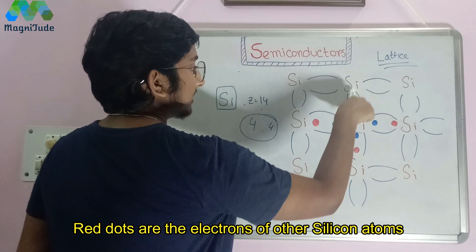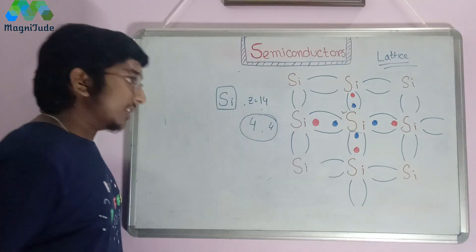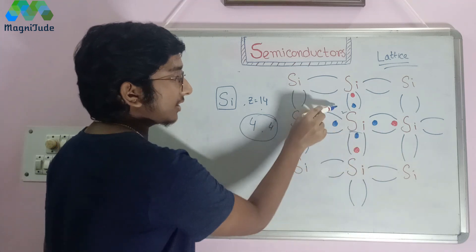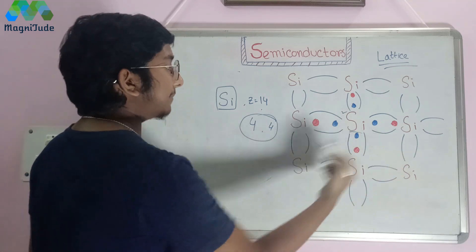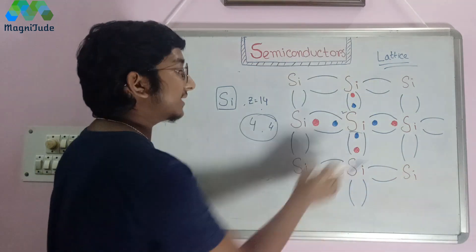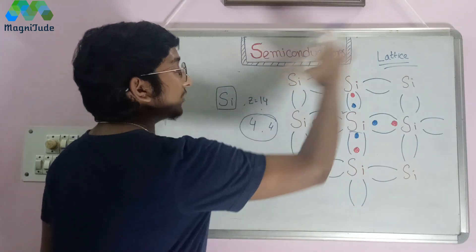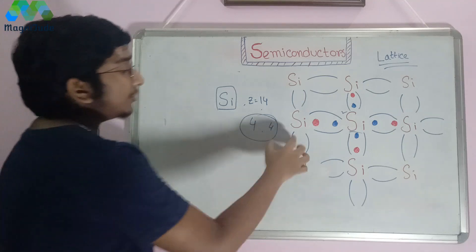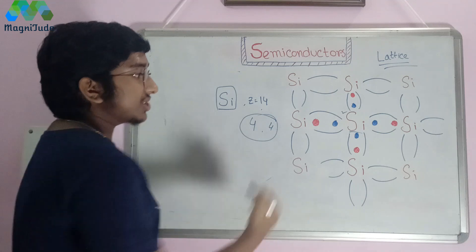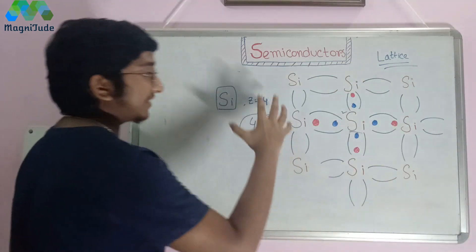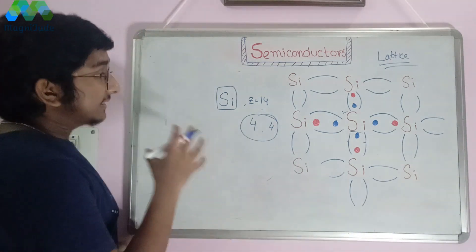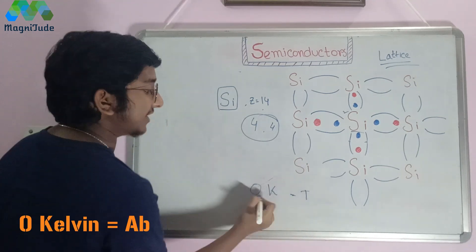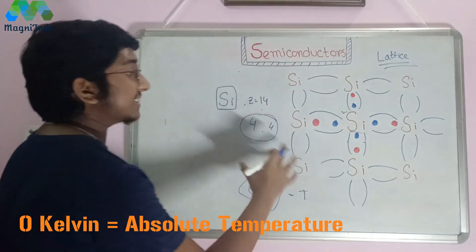The blue dots represent the four electrons of the central silicon atom, and there are also electrons from the adjacent silicon atoms. They form covalent bonds between each other — here a covalent bond, here also, here also, and here also. The covalent bond means the sharing of electrons, so they share electrons between them forming a particular lattice of silicon atoms. This lattice is only stable at zero Kelvin (0 K) temperature.